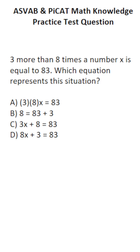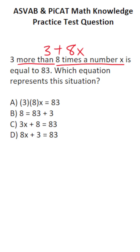I want to start right here: 8 times the number x. So 8 times the number x means 8 times x, or 8x. Now, 3 more than — 3 more than means you add. So 3 plus 8x is equal to 83.